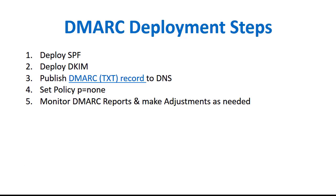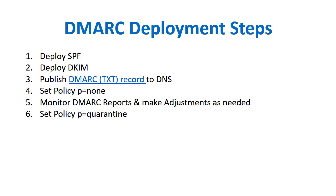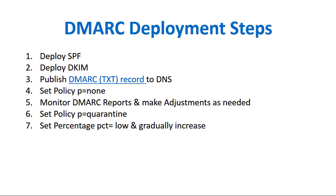Once you've made additional adjustments and you're ready to start requesting that messages that don't align properly with DKIM and SPF be quarantined, you can set your DMARC record policy to P equals quarantine. The next step is to implement your quarantine policy in stages by setting a percentage of messages handled based on the policy you set. For example, you can start with a lower percentage such as 10%, and then gradually increase it as additional adjustments are made.